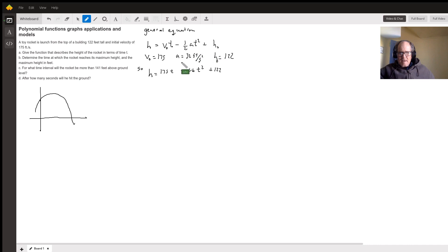Now, a is your acceleration of gravity, your constant of gravity, which is 32 feet per second squared. And your height is 122 according to the problem. So there we've got our formula. That's going to do all the work for us.